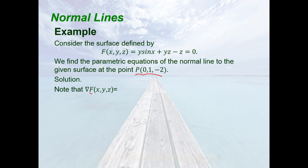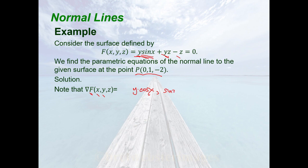For the partial derivative of f with respect to x, we treat y and z as constants. The first term gives y·cos(x), and the remaining terms contribute 0. For the partial derivative of f with respect to y, we treat x and z as constants. The first term gives sin(x), and the second term yz gives z, so f_y = sin(x) + z. The last term −z contributes 0.